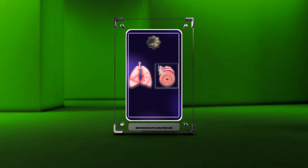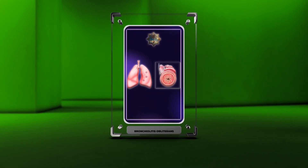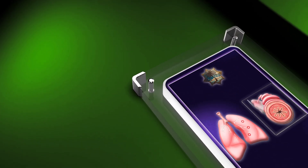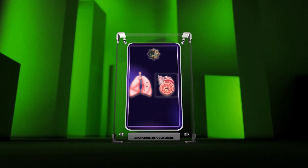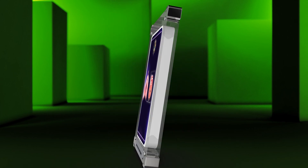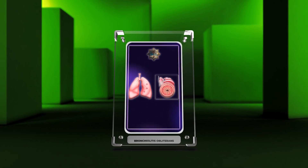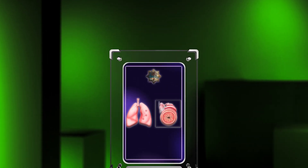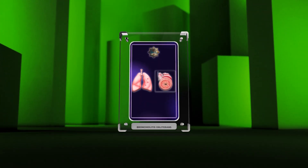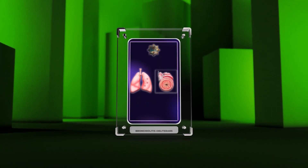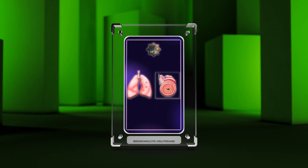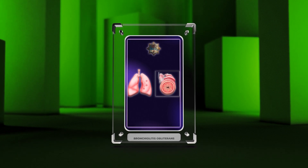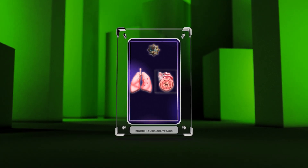Welcome to today's lecture on bronchiolitis obliterans. In this session, we will delve into the pathogenesis, clinical presentation, immune-mediated mechanisms, histopathology, treatment approaches, and various other aspects of this debilitating respiratory condition. Bronchiolitis obliterans is a complex disease characterized by the inflammation and scarring of small airways, resulting in obstructive airflow limitation. Understanding the intricacies of this condition is crucial for accurate diagnosis and appropriate management.